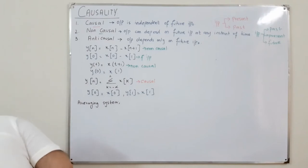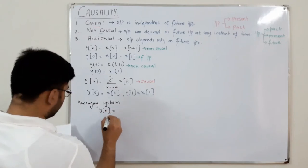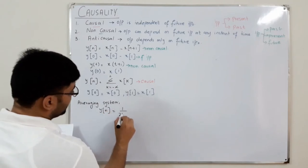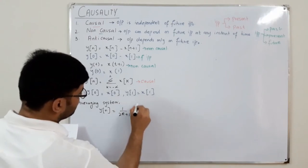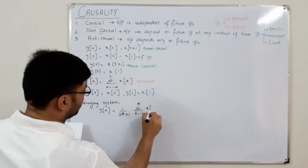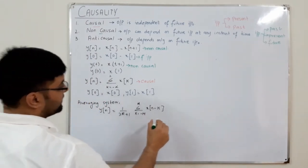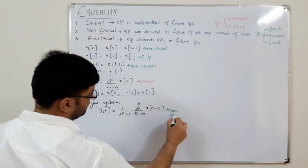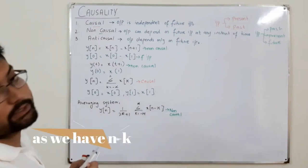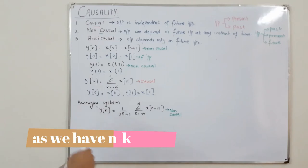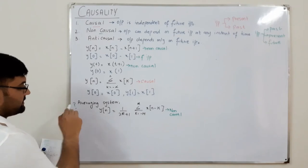For the averaging system: y[n] = (1/(2M+1)) · Σ x[n-k] for k from -M to +M. According to the book, this is a non-causal system. The explanation is given in paragraph form in the textbook.